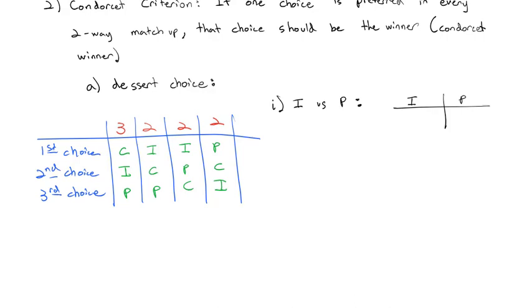We're going to see who wins between ice cream and pie and tally the votes. Ice cream has beaten pie in this first column, so we'll give ice cream those three votes. Ice cream beats pie in the second column, so two votes. Ice cream beats pie in the next column, so two more votes. But in the last column pie has beaten ice cream, so pie gets those last two votes. In this head-to-head matchup ice cream seems to have won versus pie.